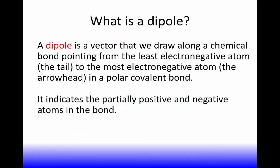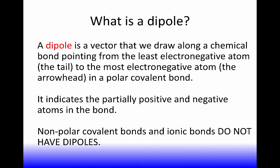That arrow works similarly to the delta plus and delta minus. The arrowhead indicates the partially negative side of the bond, and the tail indicates the partially positive side. Nonpolar covalent bonds and ionic bonds do not have dipoles — we do not draw arrows, we don't do delta plus or delta minus with nonpolar covalent or ionic bonds.